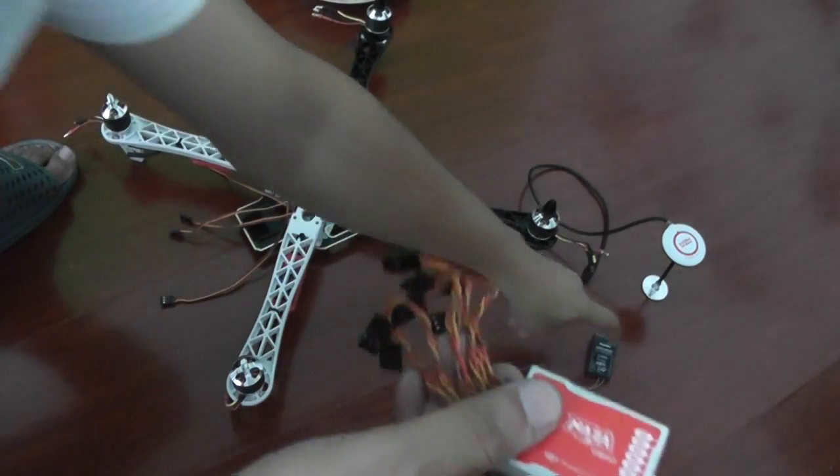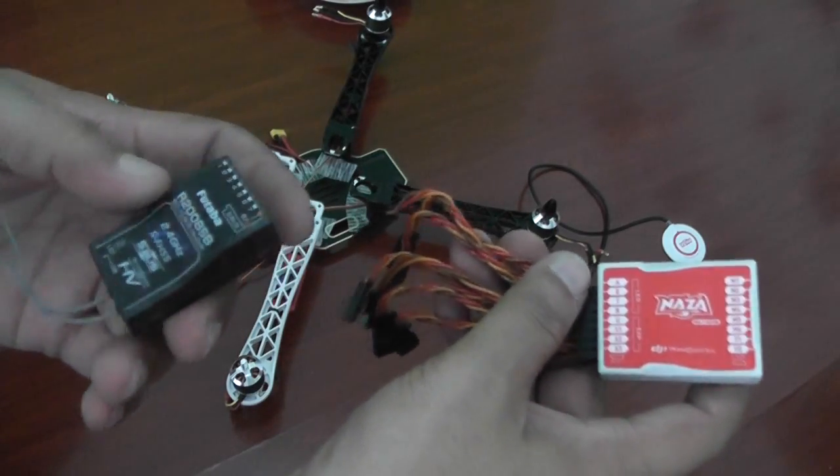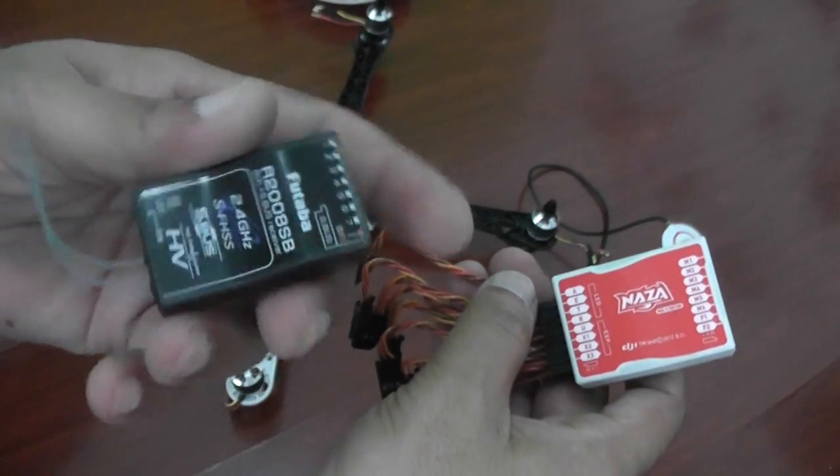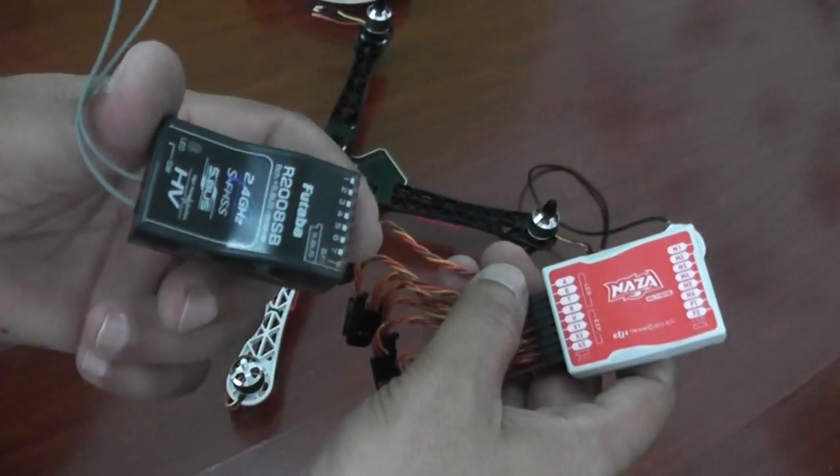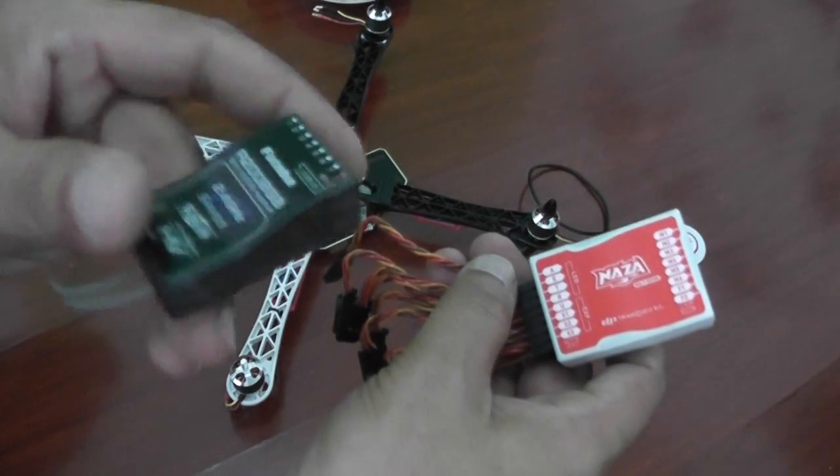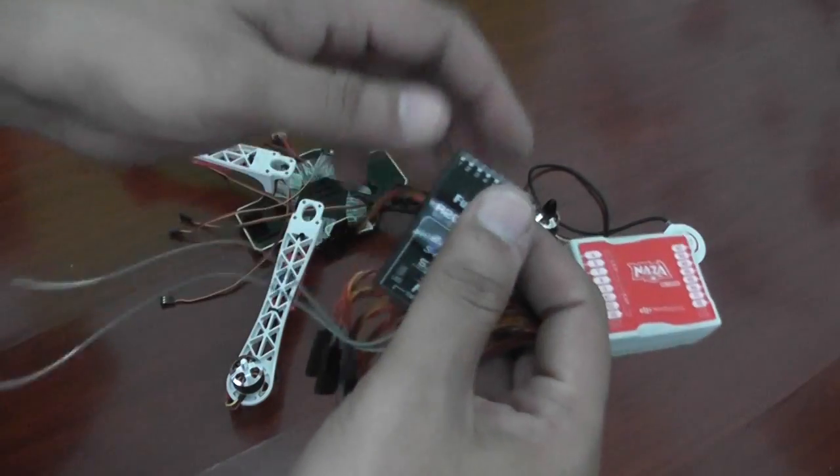Now I'm going to pick up my receiver. Here it is, Futaba R2008SB for Futaba T8CH. This video cannot be used to set up your Spektrum or JR radios, remember. This is especially Futaba setup video.